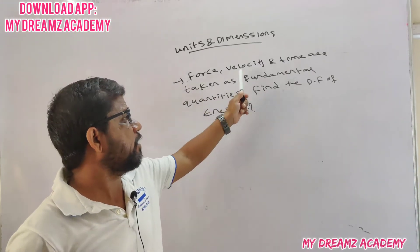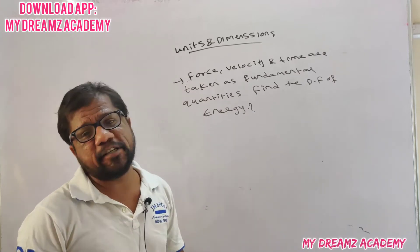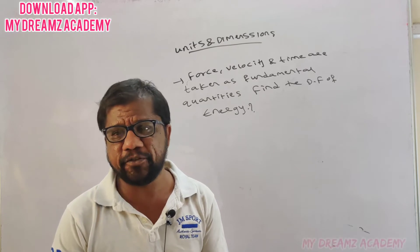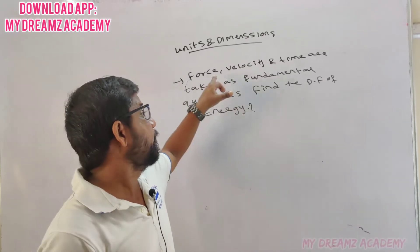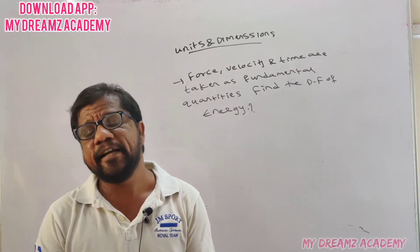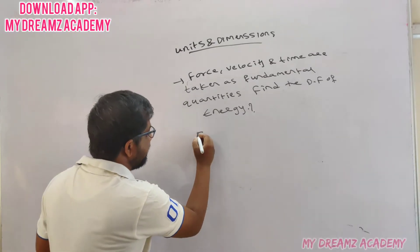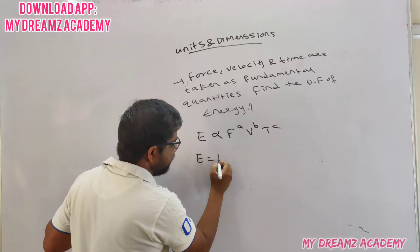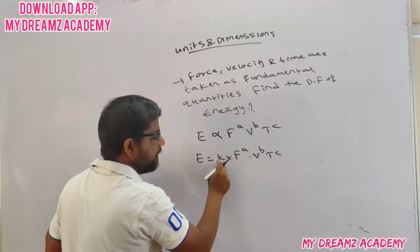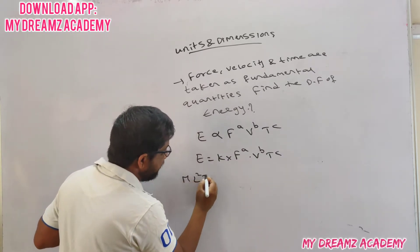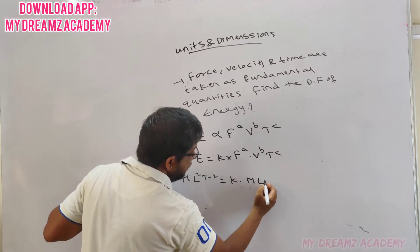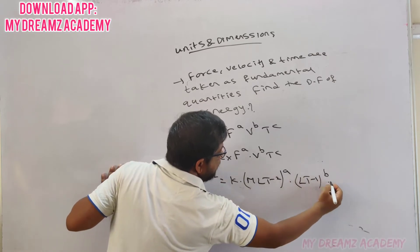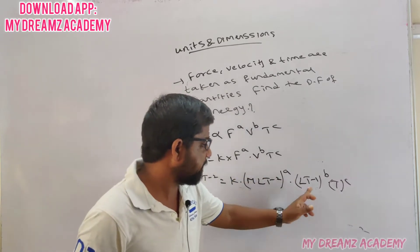The next model question is: if force, velocity, and time are taken as fundamental quantities, find the dimensional formula of energy. Normally we find dimensional formulas in terms of mass M, length L, and time T. Here, in place of mass, length, and time, force F, velocity V, and time T are taken as fundamental quantities. We assume energy E is proportional to F^a × V^b × T^c. The basic dimensional formula of energy is ML²T⁻², and force is MLT⁻², velocity is LT⁻¹.